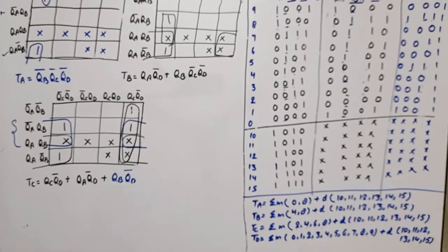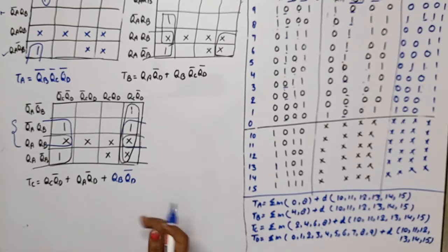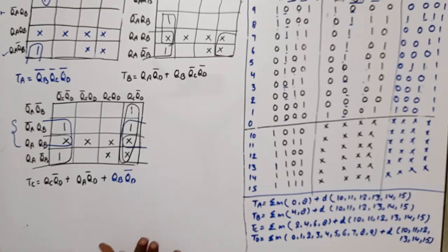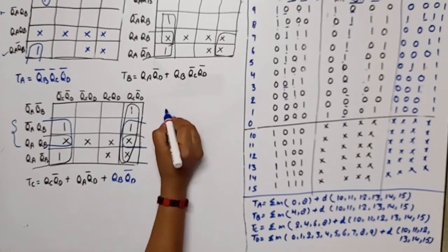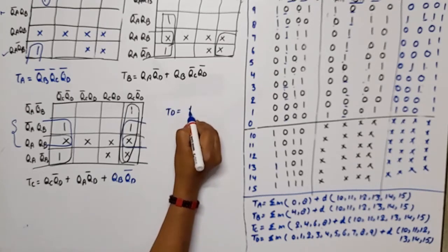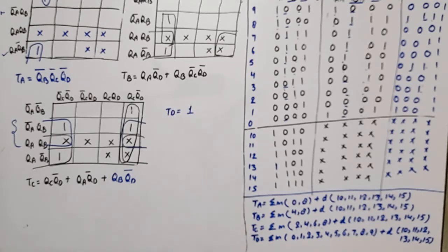For TD, all minterms and don't cares together cover all 16 combinations in the K-map, so TD equals 1. We can connect TD directly to logic high or VCC. Now let's draw the circuit diagram.